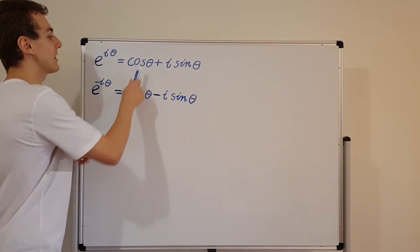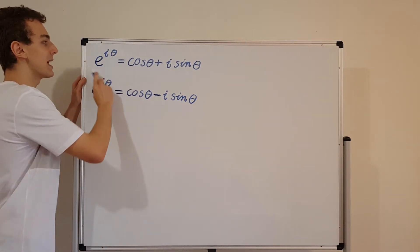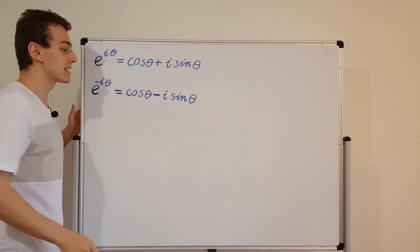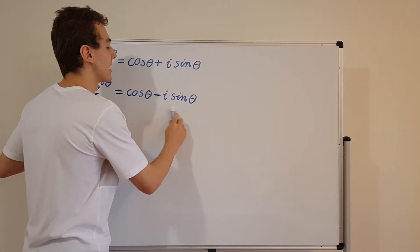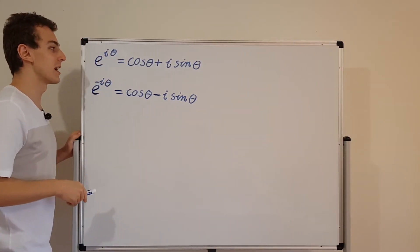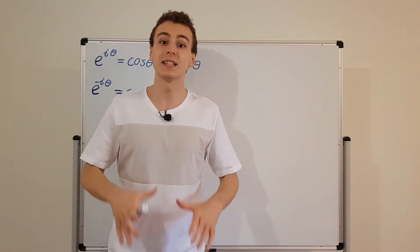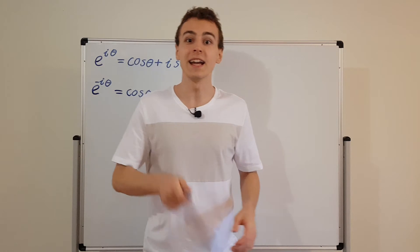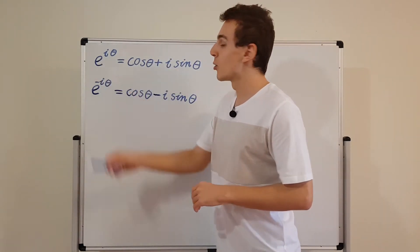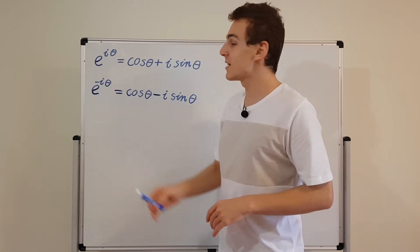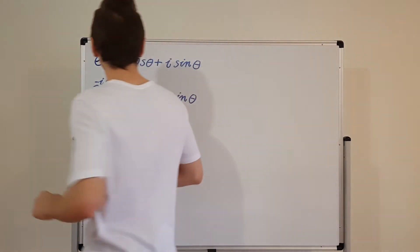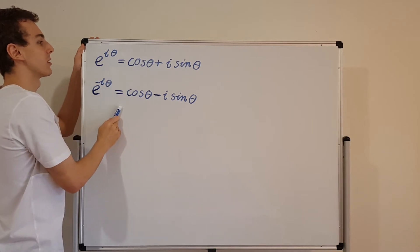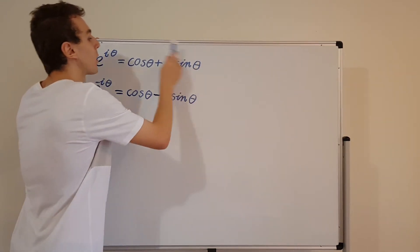Now we're going to use this exponential and its complex conjugate to write two expressions — one for cosine of theta and one for sine of theta. These are going to be very useful expressions because cosine and sine are sometimes very difficult to work with, especially when doing calculus — differentiating and integrating. It's much easier to work with exponentials because they have a very simple rule for differentiation. So let's go ahead and add these two expressions to each other.